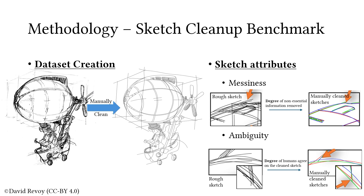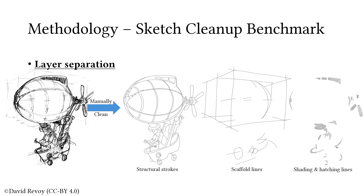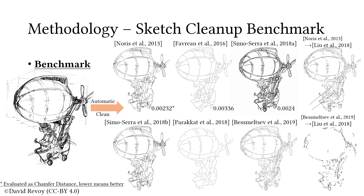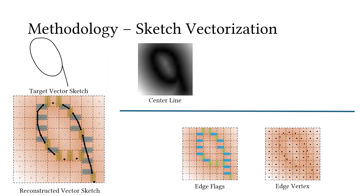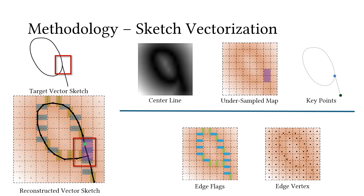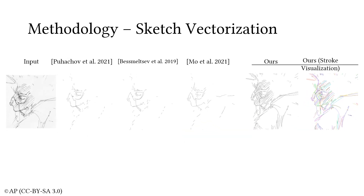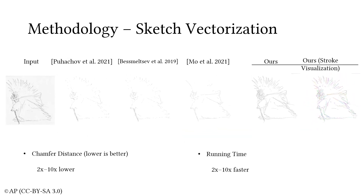We begin by studying a key stage in this process: sketch cleanup. To support this, we develop a sketch cleanup dataset, uncovering key attributes of sketches, firstly separating strokes based on their types, and conducting a comprehensive benchmark of state-of-the-art methods. This analysis allowed us to propose new directions that align with how humans perceive and refine their drawings. Building on these insights, we tackled the challenge of converting complex sketches into vector form. By framing vectorization as a surface extraction problem, we chose the oriented distance field as the intermediate representation and used dual contouring to reconstruct the vector lines. Our method achieved state-of-the-art results in handling intricate details like strokes and junctions.